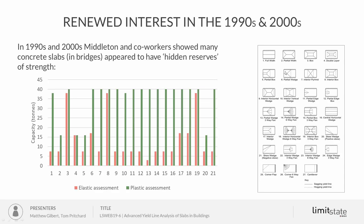In terms of the method used, Middleton and co-workers created a library of 27 potential failure mechanisms. Many modes of failure were modelled, however there is always a slight danger that a critical mechanism number 28 — not in the library — might be missed, so there is a risk of overestimating capacity. That is something we've addressed with the full automation of the yield line method.